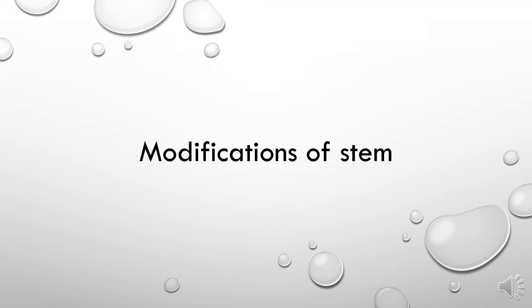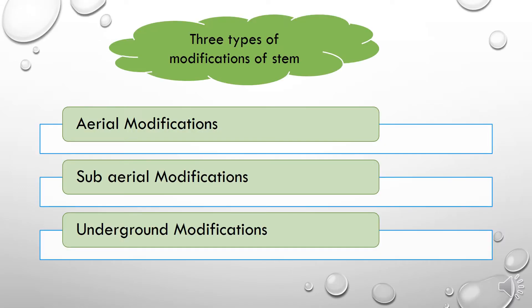Modification of the stem. In this section we will study how the stem is modified for performing different functions. The stem has two types of modifications: the first one is aerial modification, the second is sub-aerial modification, and the third is underground modification.